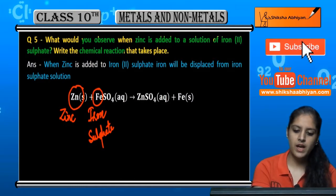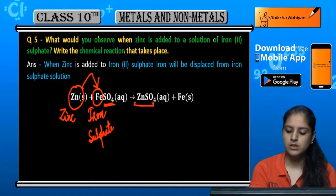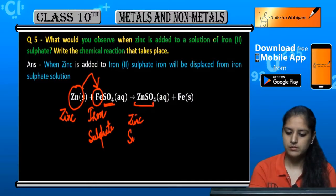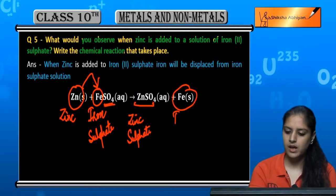This is zinc, it has displaced iron and it is combined with sulfate to form zinc sulfate. And then, it is only iron metal.